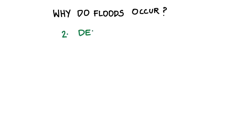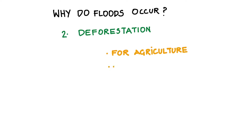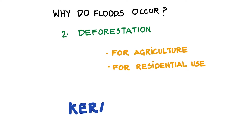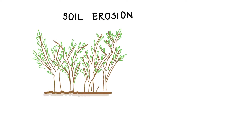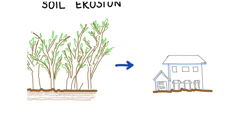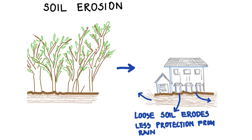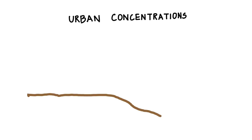A second major reason floods are occurring more often is deforestation. Farmers and other people clear forests for agricultural and residential use. The devastating Kerala floods of 2018 were attributed to a combination of factors including global warming and deforestation. When trees are removed, it loosens the soil, increasing the chance of soil erosion. Trees normally absorb large quantities of heavy rainfall in their root systems, but without trees, the effect of heavy rains is felt more intensely since there is less natural protection and absorption.